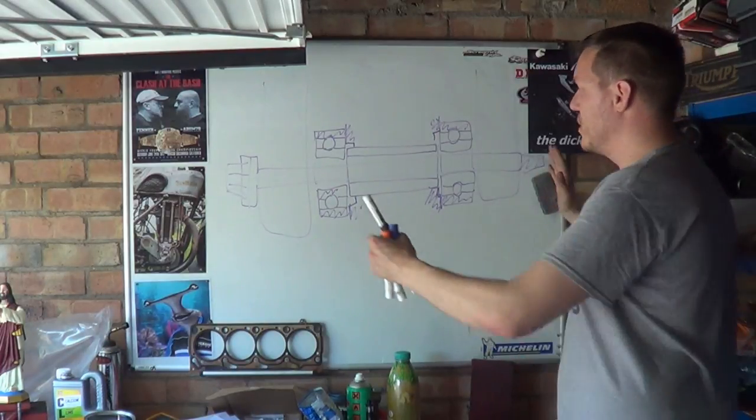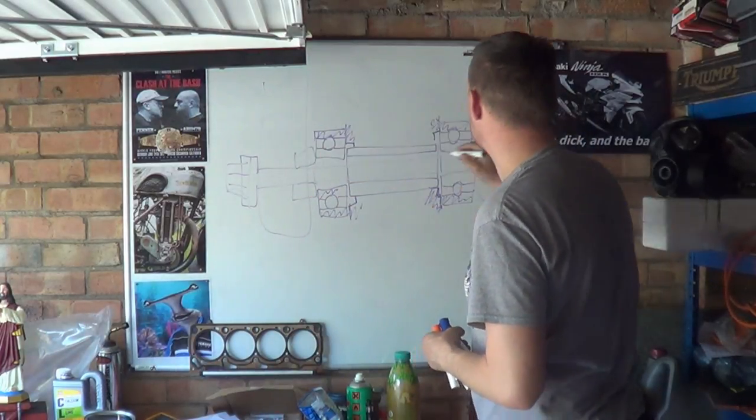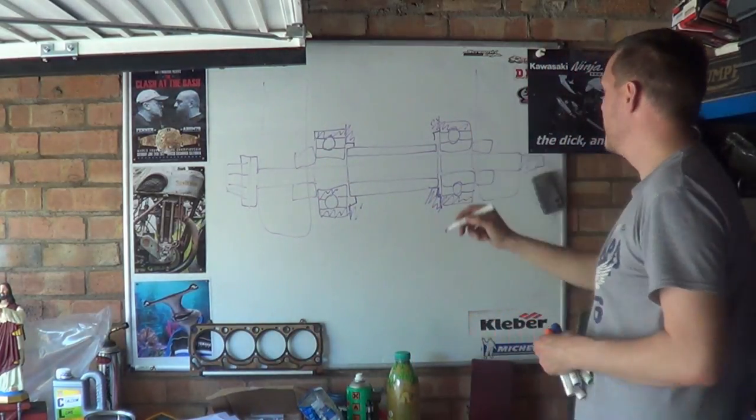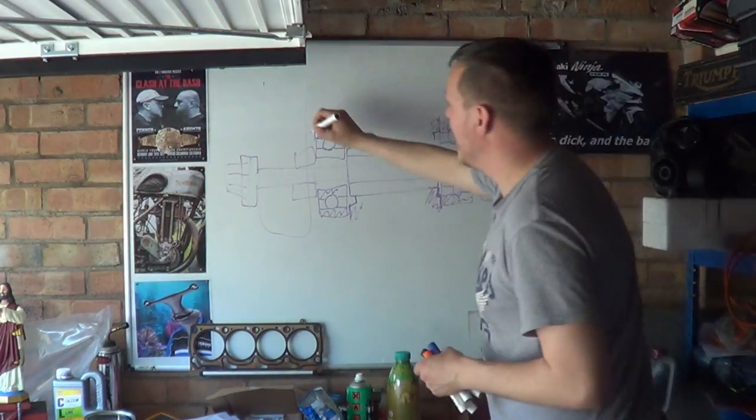So what happens is when you tighten this nut, the whole thing clamps in. And generally we have wheel spacers here or something like that, right? And then there's your swing arm jobby. Yeah, bad picture. Anyway.